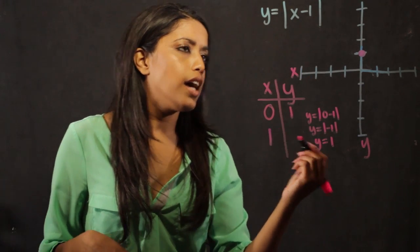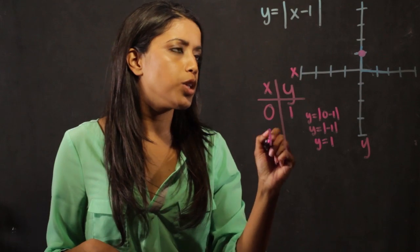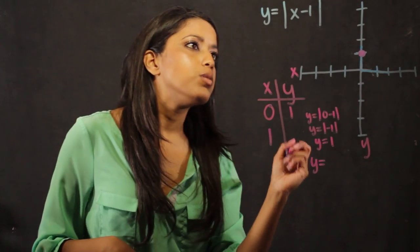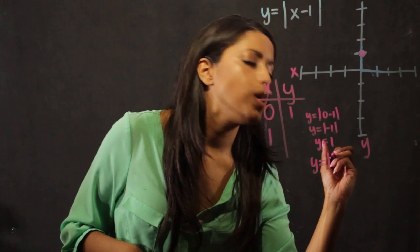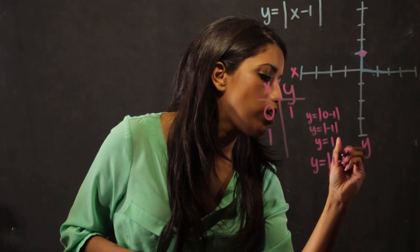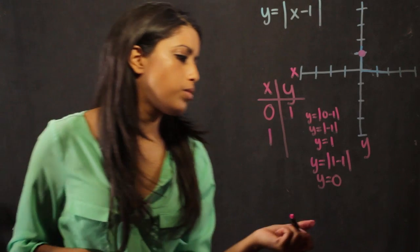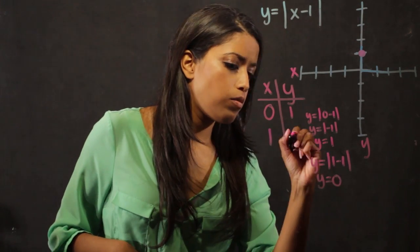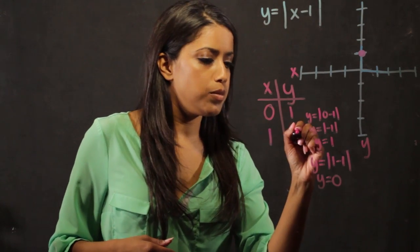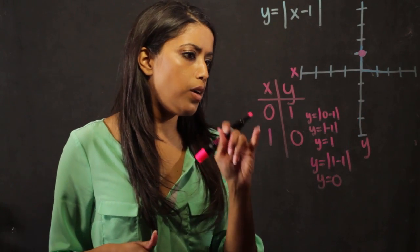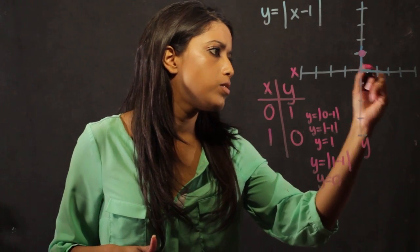What I do is put the 1 in for x, and I get y equals the absolute value of 1 minus 1, which means y equals 0. The absolute value is 0. So when x is 1, y is 0, and it's over here.